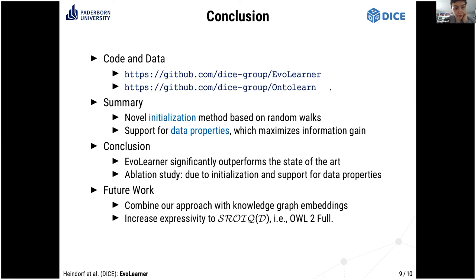To summarize: we contributed a novel initialization method based on random walks, and we added support for data properties based on information gain. We conclude that EvoLearner significantly outperforms state-of-the-art approaches, and our ablation study shows this is due to our initialization method and support for data properties. In future work, one idea is to combine our approach with knowledge graph embeddings to guide the random walks in a promising direction and to increase expressivity to a full standard.